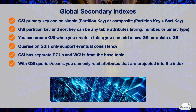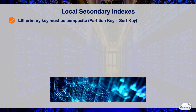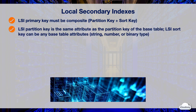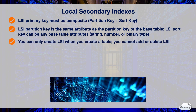The primary key of a Local Secondary Index must be a composite primary key, composed of a partition key and sort key. The LSI partition key is the same attribute as the partition key of the base table. The LSI sort key can be any base table attribute as long as it's a string, number, or binary type. You can only create LSIs when you create a new table — you cannot add a new LSI to an existing table after its creation.